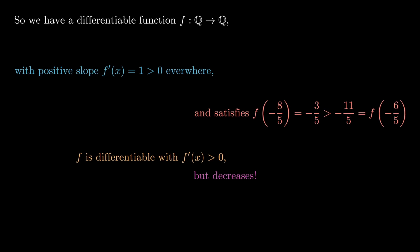So what we've just shown is that if we do calculus with the rationals, we get a function which is differentiable with positive derivative everywhere, but it goes down. And so what we see is that there's a fundamental distinction between doing the calculus that we're all familiar with on the real numbers in comparison with doing calculus on the rational numbers.